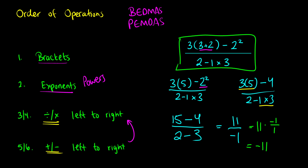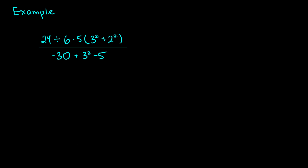Now let's do two more examples. Here's a really complex one: 24 divided by 6 times 5 times (3 squared plus 2 squared), all over negative 30 plus 3 squared minus 5. Remembering our acronym BEDMAS — brackets, exponents, division, multiplication, addition, subtraction — first we do the brackets.